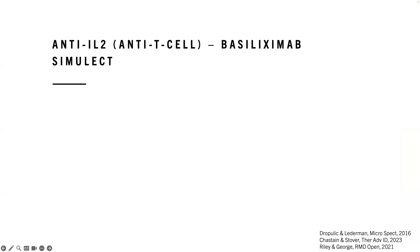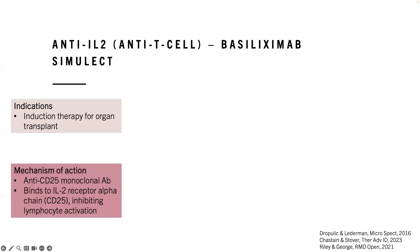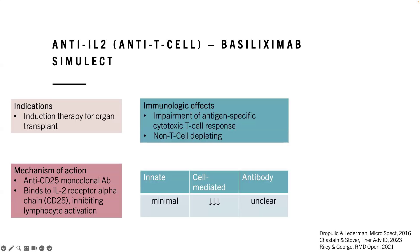Basiliximab (also known as Simulect) is an anti-IL-2 drug — specifically anti-T cell. It's an anti-CD25 monoclonal antibody (the receptor for IL-2), used frequently for organ transplant induction therapy. It inhibits lymphocyte activation and is mostly focused on cell-mediated immunity. Importantly, it is non-T cell depleting, which differs from some other agents. As a result, the infectious complications are really minimal, and although used in combination with many potent drugs, in and of itself it's not a particularly potent cause of infection.